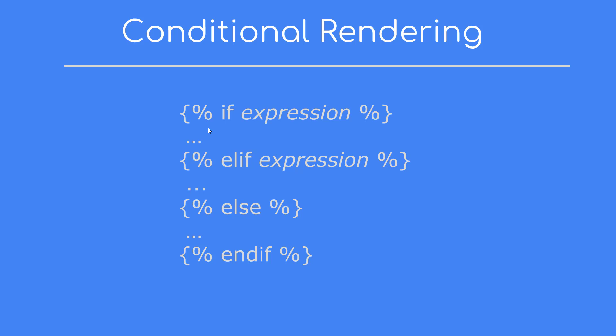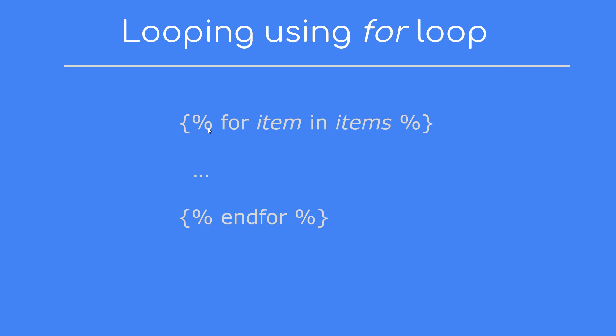We will be using conditionals to check if the context is passing data, and also to check whether a contact object is male or female to apply the appropriate styles. In Jinja2 we can loop through a list of items using a for loop. The for loop starts with `for item in items` and must be closed with endfor. For every item in the items list, we run some code inside it.